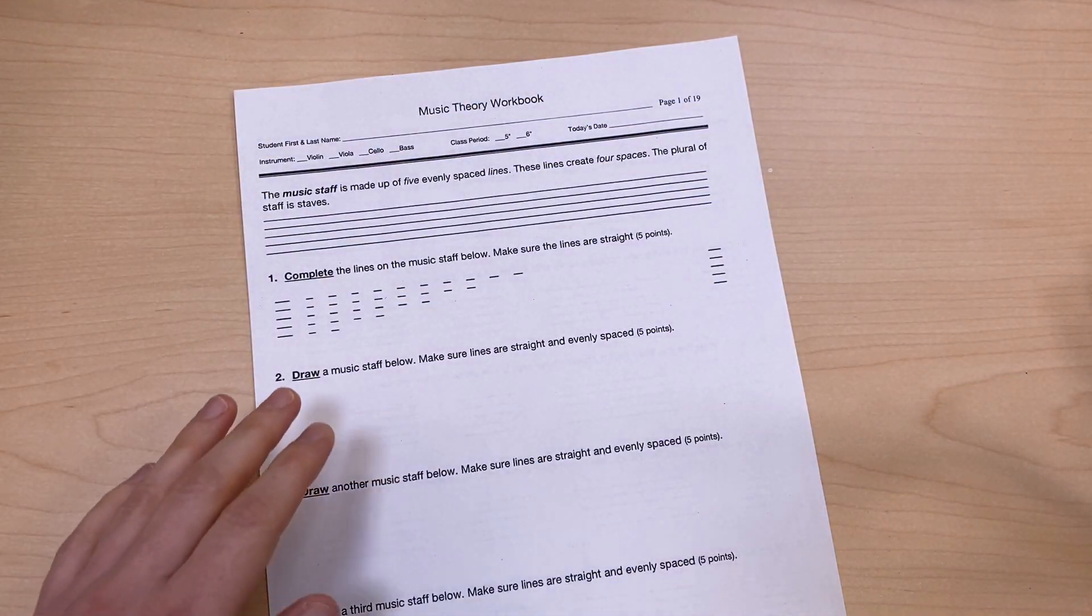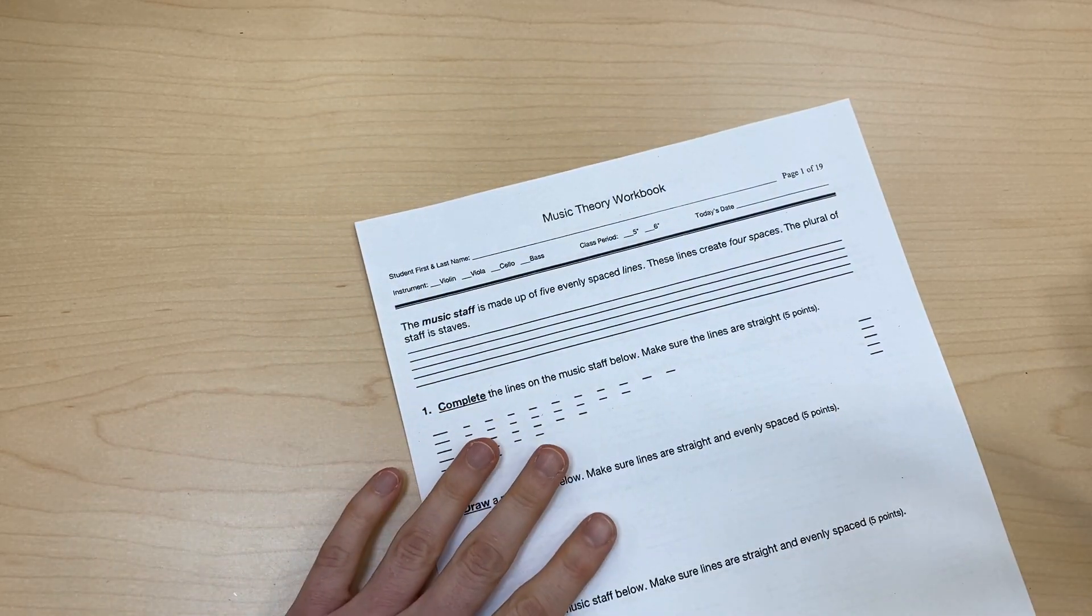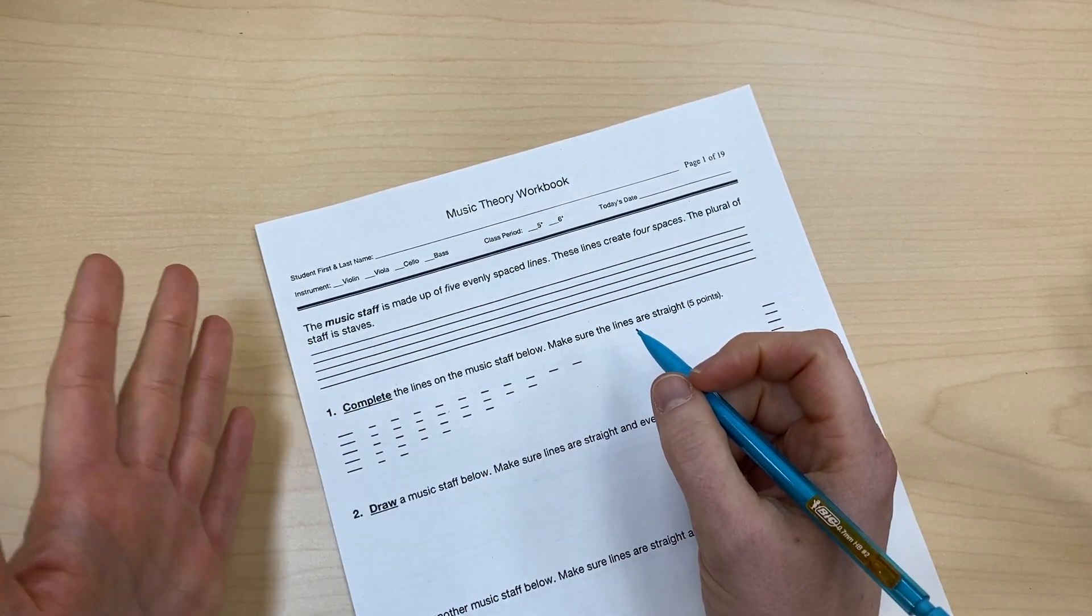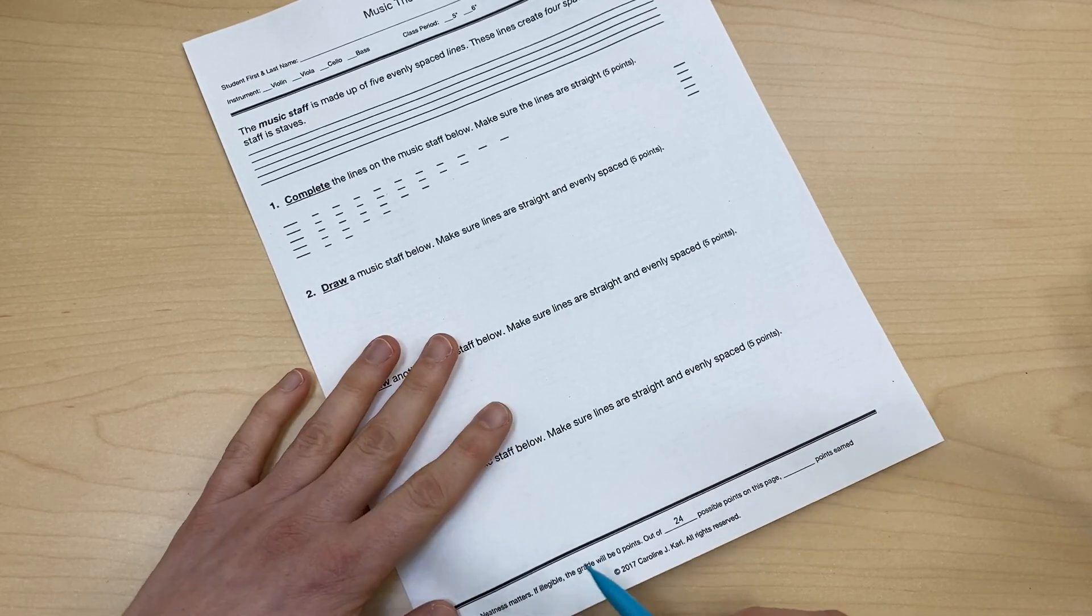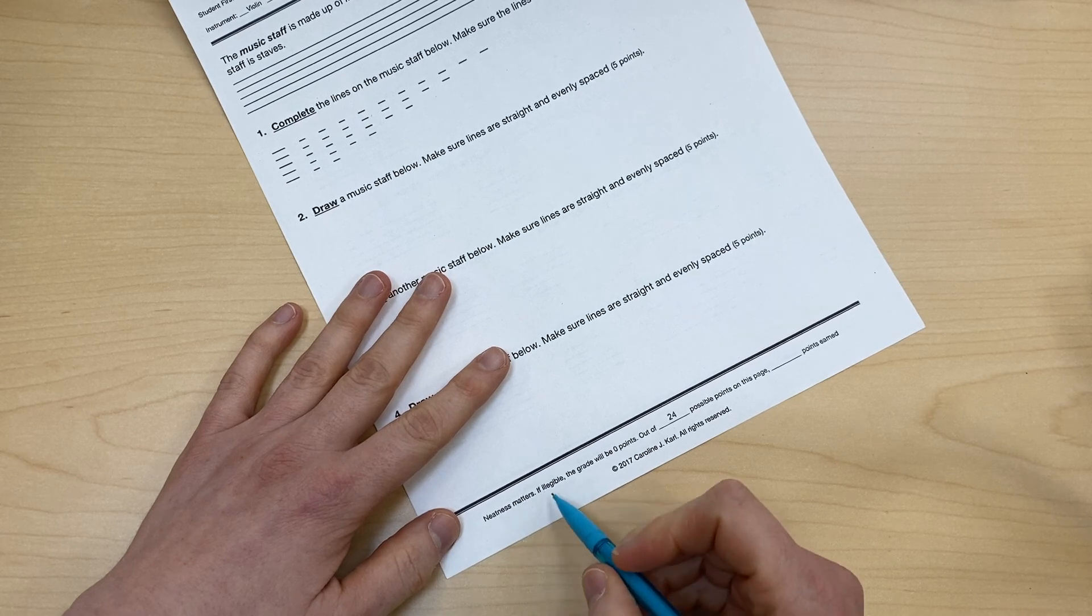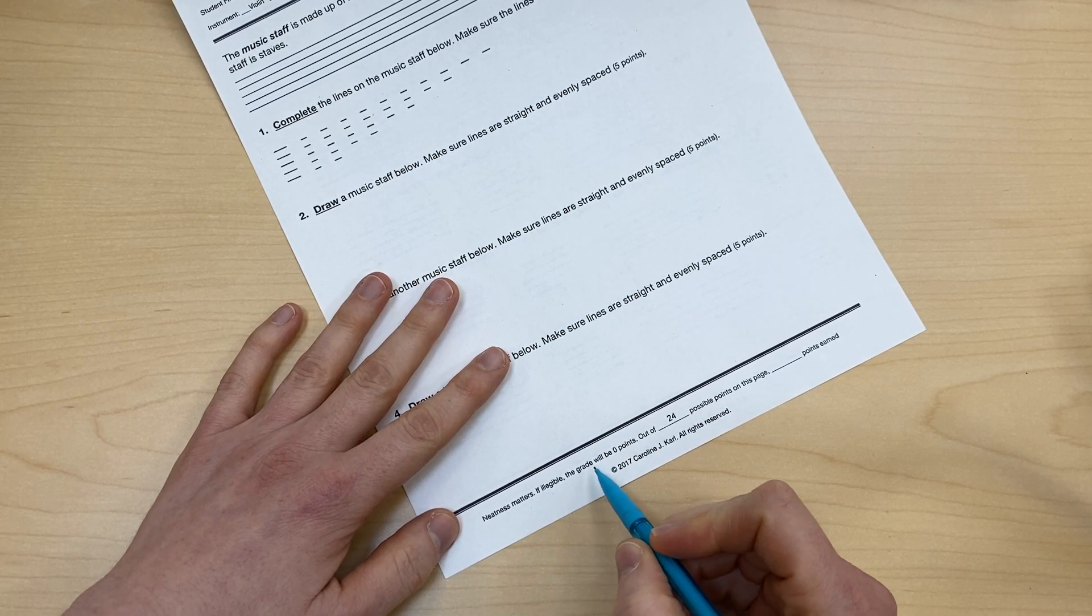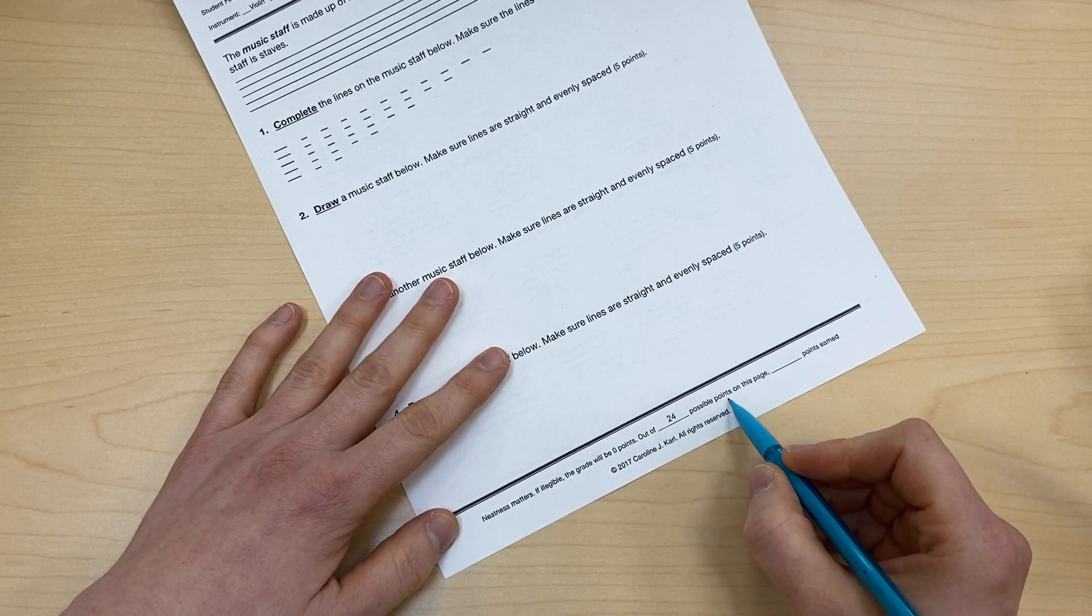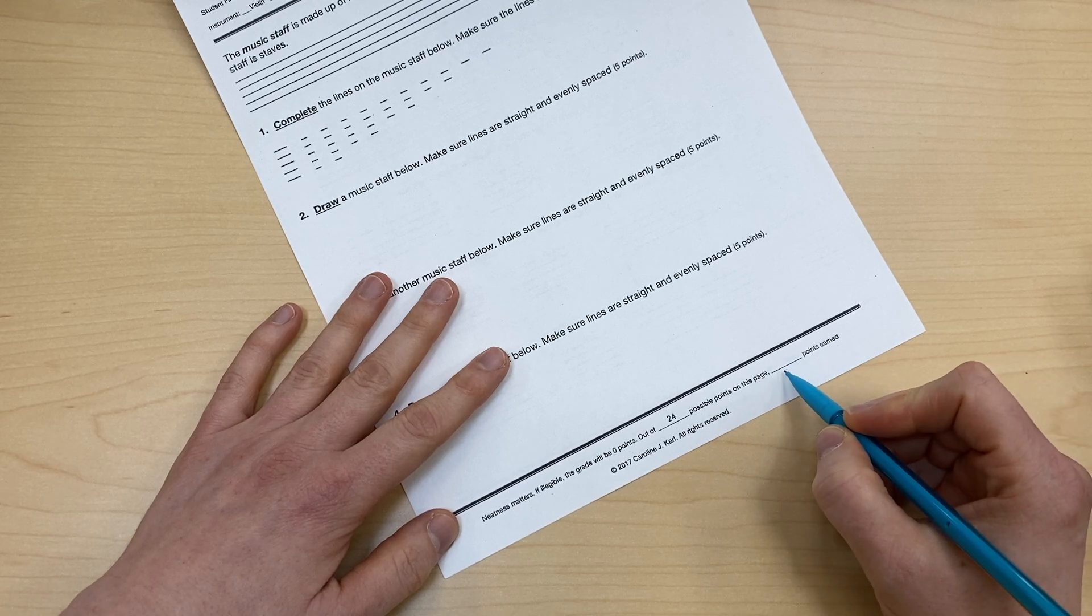On our worksheet, we have to make sure that we read all the directions and fill everything in because they're worth points. If you come down here to the bottom of the paper, it says Neatness Matters. If illegible, that means if we can't read it, the grade will be zero points. Out of 24 possible points on this page, blank points earned. So this is where your score will be.